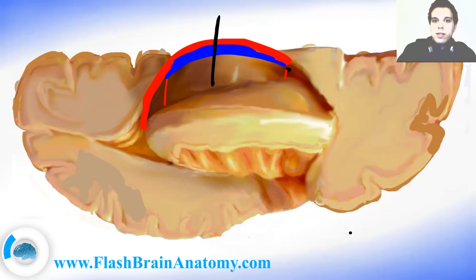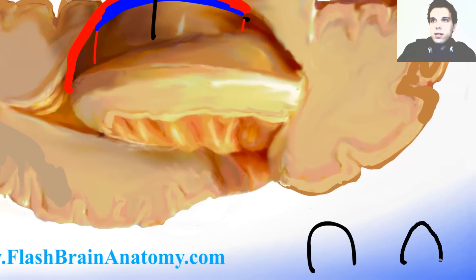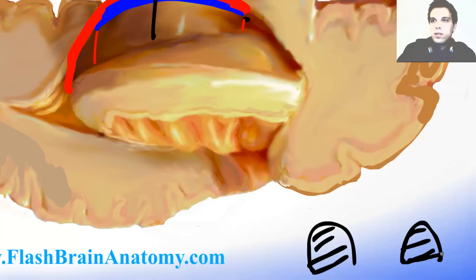If we make a frontal cut, it would look like this. First we have the thalamus on both sides, and then we have the fornix.